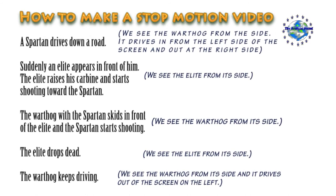Here you can see that I created a script. A spartan drives down a road. Suddenly an elite appears in front of him. The elite raises his carbine and starts shooting towards the spartan. The spartan skids in front of the elite and starts shooting back. The elite drops dead. The spartan keeps driving. As I said, for every scene you can see that I added a description. This is to show from which angle you are going to take the pictures. You don't have to do this but it will make it far easier for you.